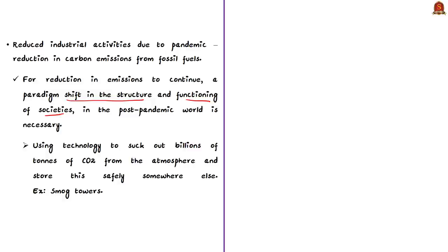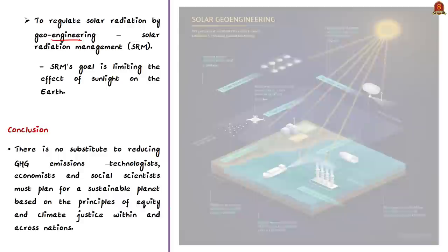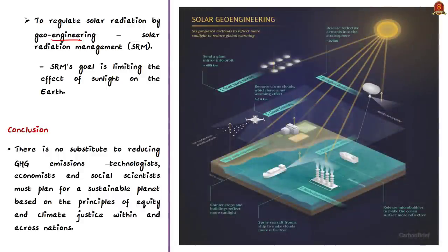The author discusses the usage of technology to suck out billions of tons of CO2 from the atmosphere and store it safely. For example, inventions like smog towers capture polluted air and the carbon particles can be turned into diamonds. There is also an idea to regulate solar radiation through geoengineering — the deliberate large-scale manipulation of the earth's environment to offset harmful consequences of greenhouse-gas-induced climate change. One approach is solar radiation management, which includes methods such as sending a giant sun shade into orbit or releasing aerosols into the stratosphere.